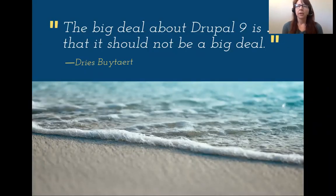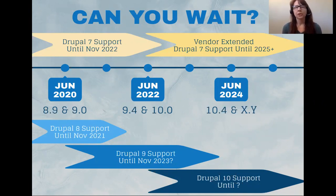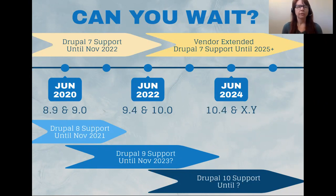You've probably heard the quote: the big deal about Drupal 9 is that it should not be a big deal — and that's true if you're on Drupal 8. If you're on an earlier version, it's still unfortunately a big deal. As far as timing: if you're on Drupal 8, I'd recommend just going forward with the upgrade. Drupal 7 support has been extended a bit longer than Drupal 8 due to COVID. Drupal 8 support couldn't be extended because it relies on a version of Symfony that is going end of life in 2021.